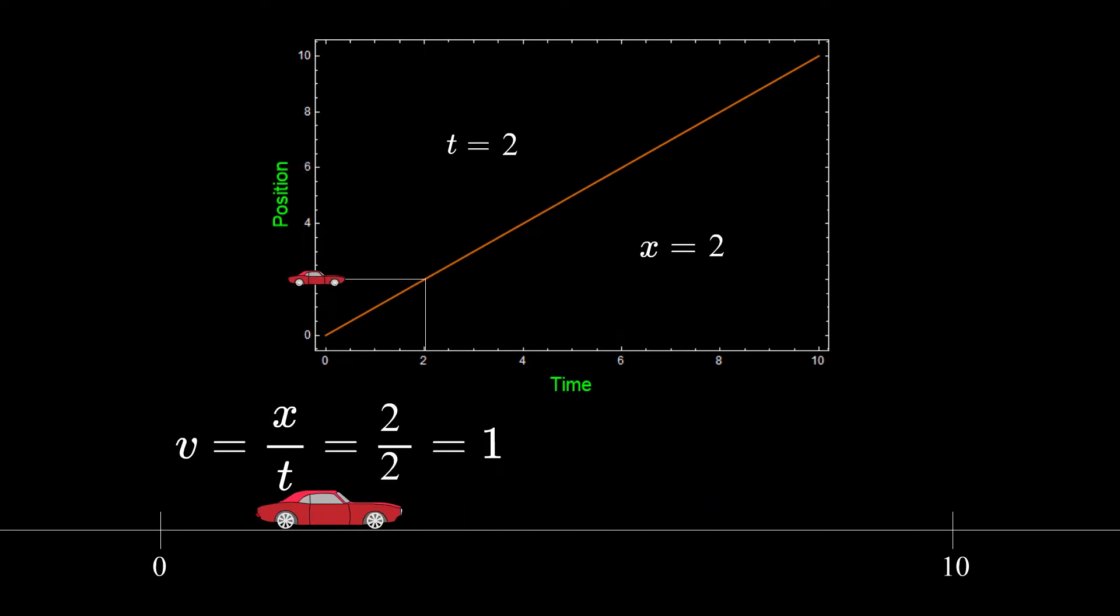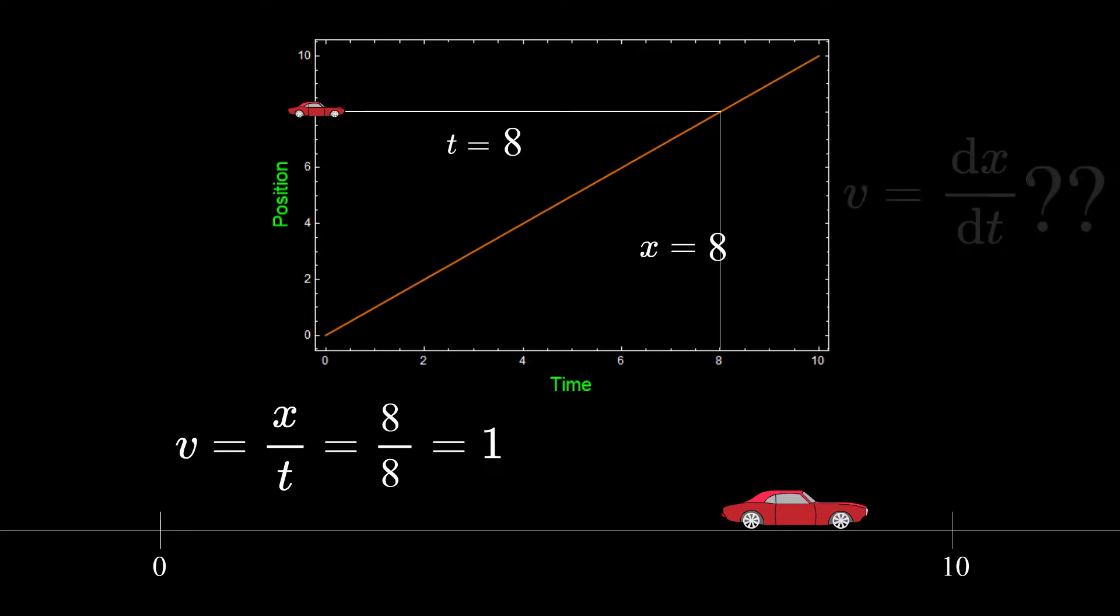You can notice that no matter what point on the graph we take, the velocity is still the same. So far everything is okay and we don't need any Ds in expression for velocity, right?